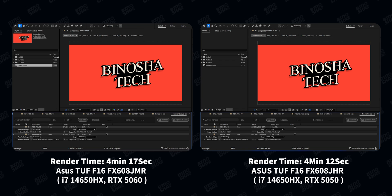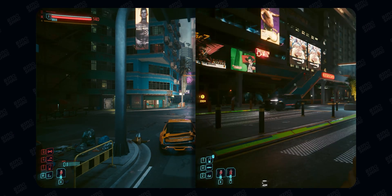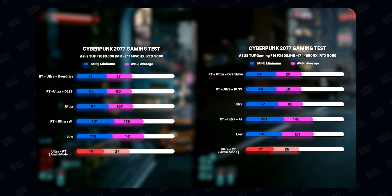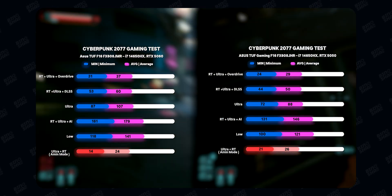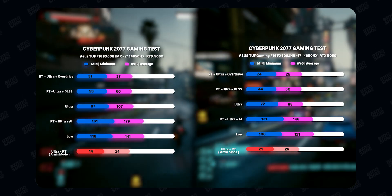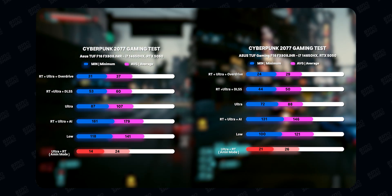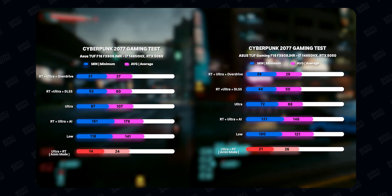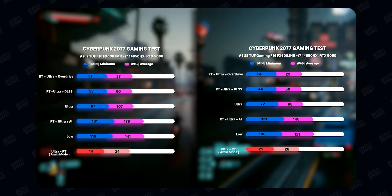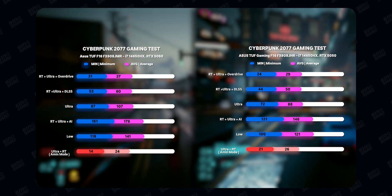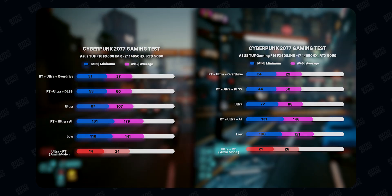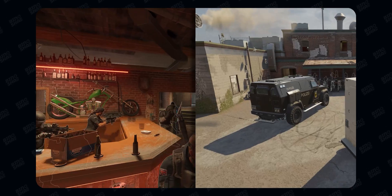In Premiere the performance difference was a bit more noticeable. As for gaming, we tested Cyberpunk 2077 on both laptops, and as you can see on screen, the performance difference was about 20% across different scenarios — except when testing raw performance with FSR, DLSS, and AI frame generation all disabled, where average FPS was almost the same. With 30% more CUDA and Tensor cores, the 5060 achieves 15 to 20% better results by generating more AI-assisted frames.